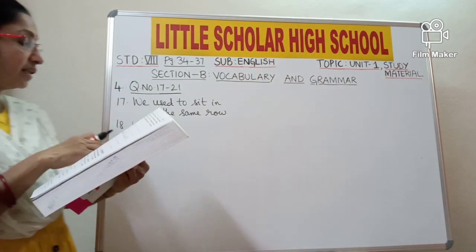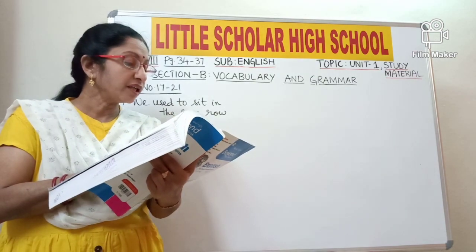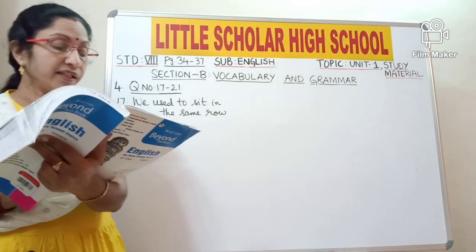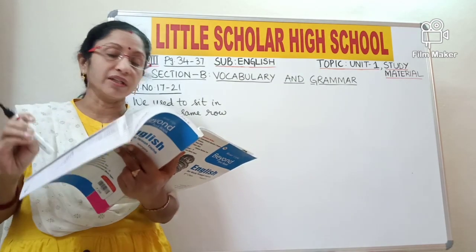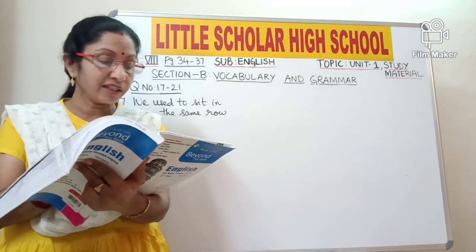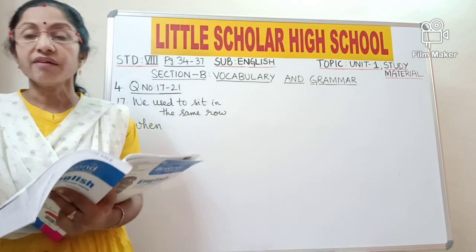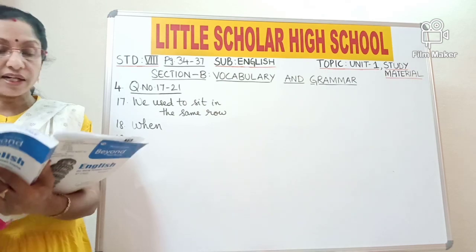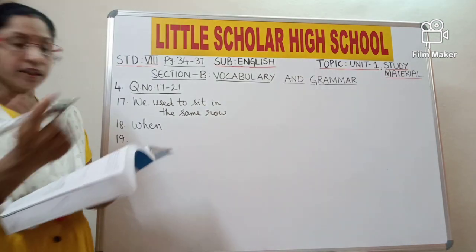Question number 19: 'I remember how we went on a picnic to Koyal Sagar.' What is the antonym of the underlined word 'remember'? Antonym is a word opposite in meaning. So the opposite of 'remember' is 'forget'.